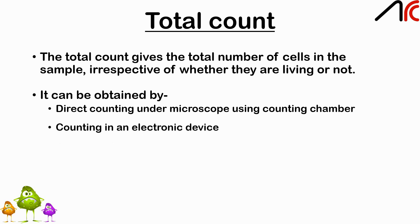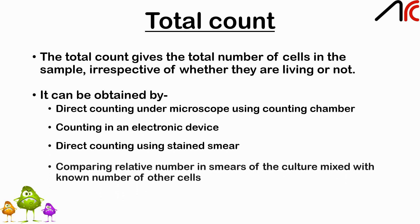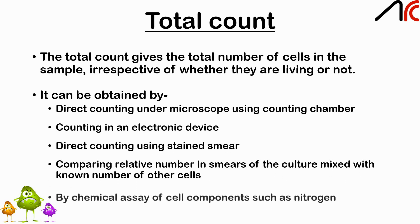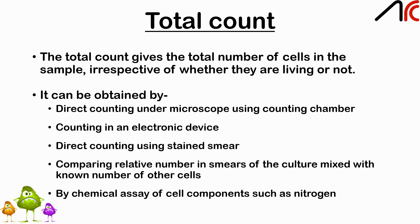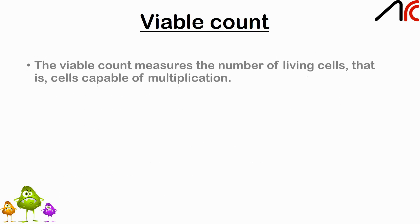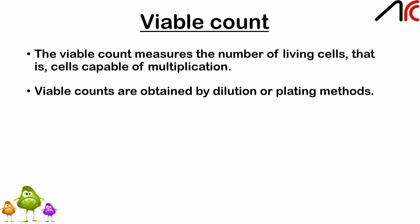Other total count methods include counting in an electronic device, direct counting using stained smears, and comparing relative numbers in smears of culture mixed with a known number of other cells, or by chemical assay of cell components such as nitrogen. The viable count measures the number of living cells capable of multiplication.